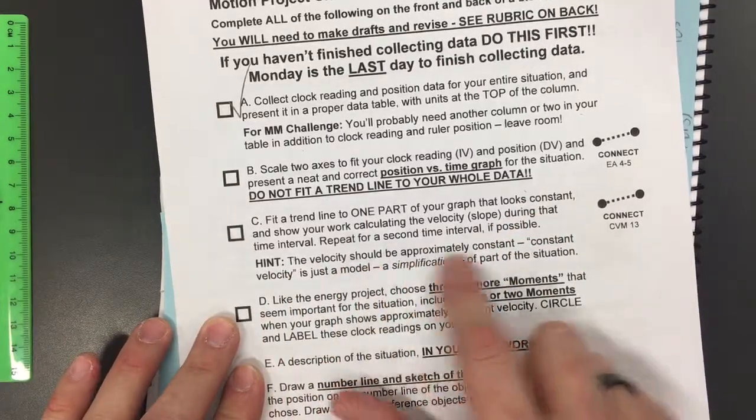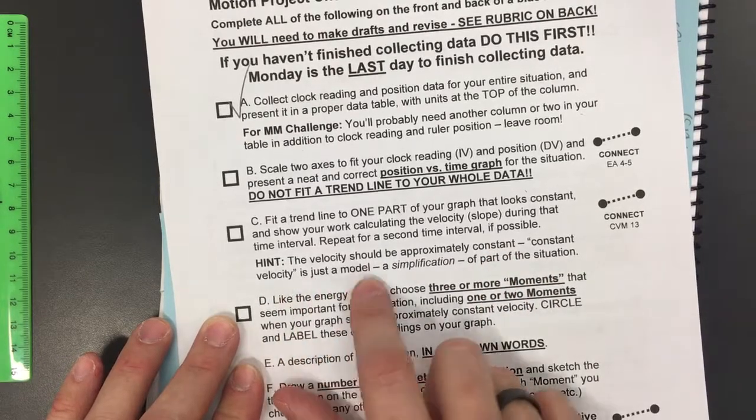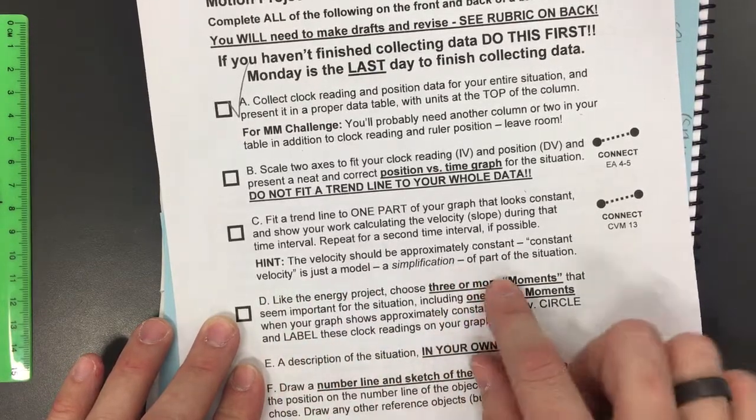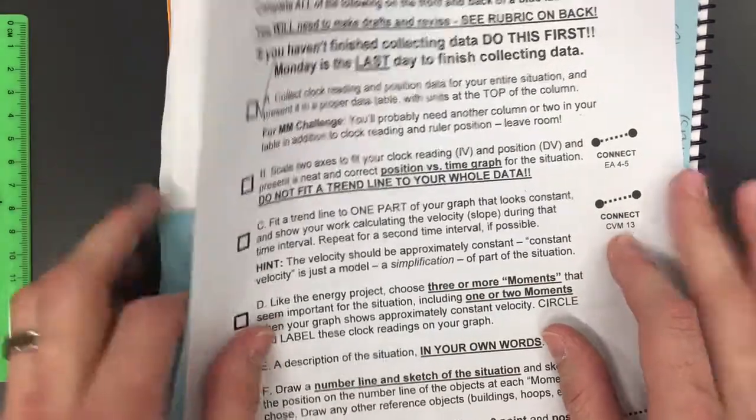We need to think about fitting a trend line to one part of the graph that looks constant. The velocity should be approximately constant. Constant velocity is just a model, a simplification of part of the situation. Notice this connects to CVM 13. So let's check this out and see what this is talking about.